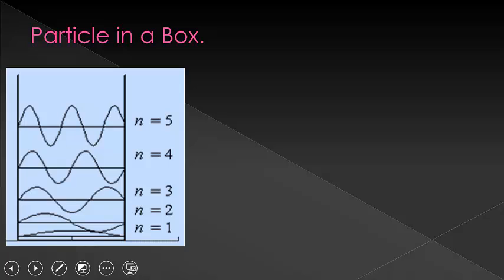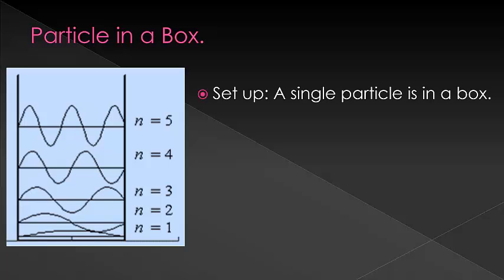The setup for a particle in a box is that when you put an electron in between two walls of infinite potential energy, or in other words, the particle isn't allowed out. If you do this, only certain wavelengths are going to be allowed.